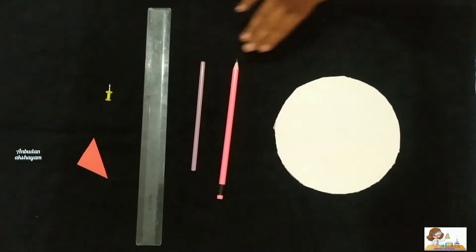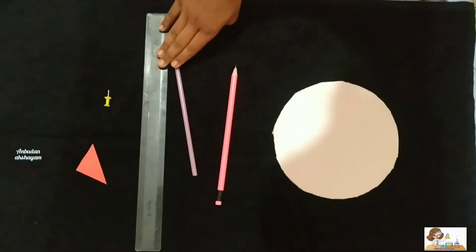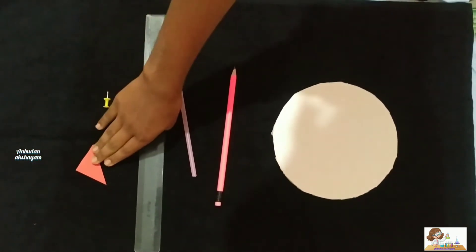For making a wind vane, we need cardboard sheet, pencil, straw, scale, pin and a piece of paper.